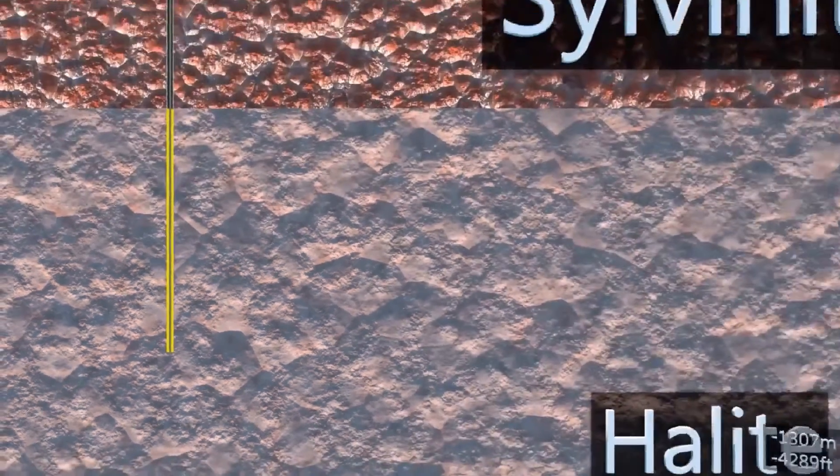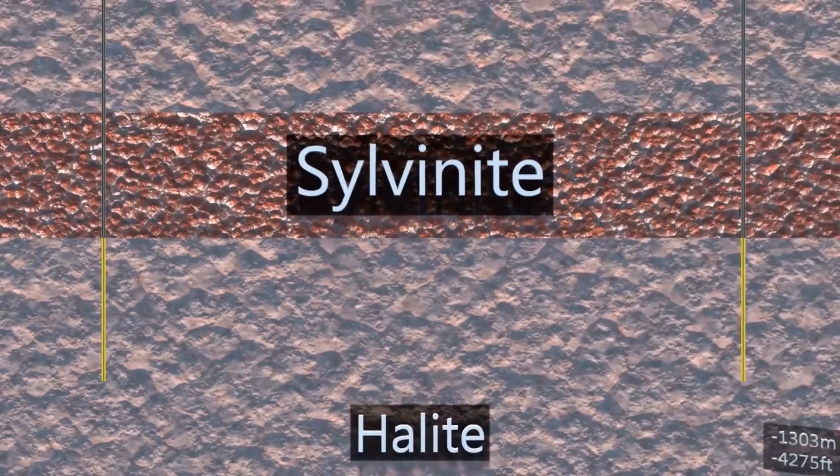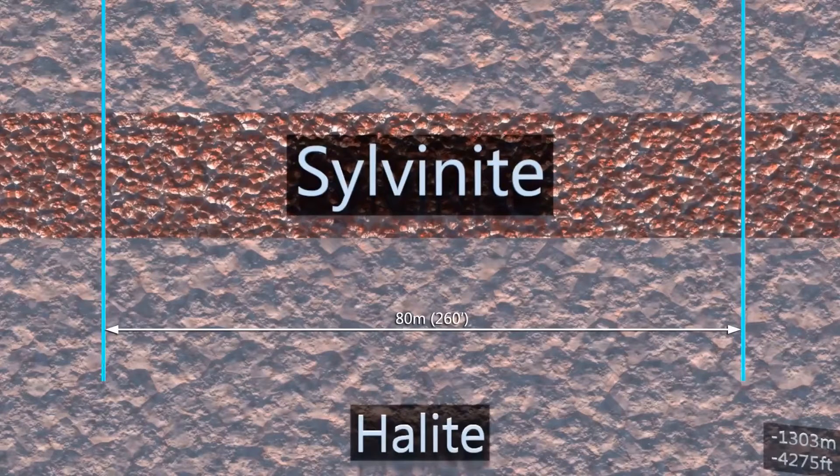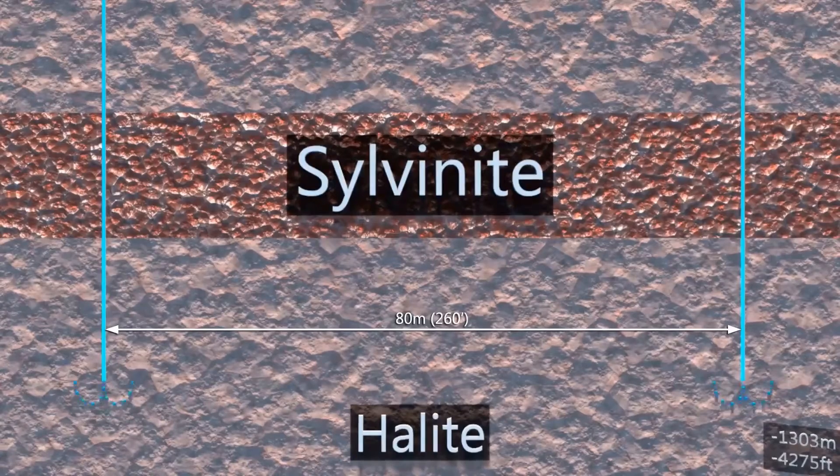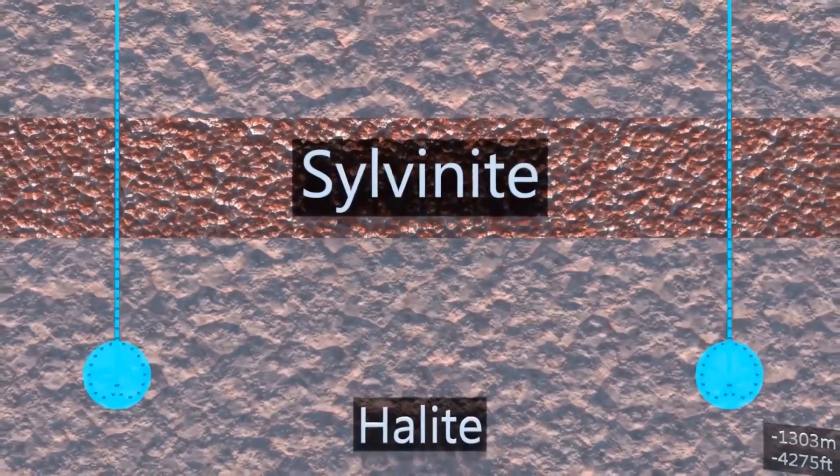Each solution-mining cavern is developed using two wells. The first step is to develop a sump at the bottom of each well. For cavern development, fresh water is used as a solvent to dissolve the salt. The water is injected and dissolves the halite, creating a brine.